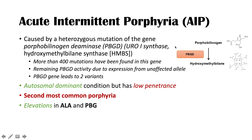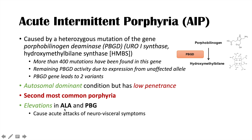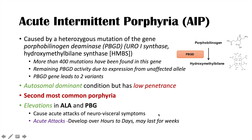Because we lose function of the porphobilinogen deaminase enzyme, we get a backup of precursors, which means elevations in aminolevulinic acid (ALA) and porphobilinogen (PBG). These elevations in ALA and PBG are what cause the acute attacks of neurovisceral symptoms. The acute attacks can develop over hours to days and may even last for weeks, so these attacks can be debilitating.